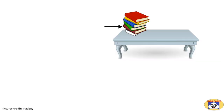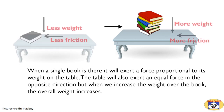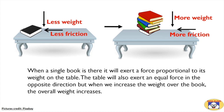Let's stack some more books over the previous one and apply equal force in the same direction. What will happen? Does the book show the same displacement? Obviously, the answer is no. When a single book is there, it exerts a force proportional to its weight on the table, and the table exerts an equal force in the opposite direction. But when we increase the weight over the book, the overall weight increases. Thus, the total force pressing the surface of the table also increases. As friction is directly proportional to this force, there is more friction in the second situation, which causes lesser displacement of the book compared to the first.